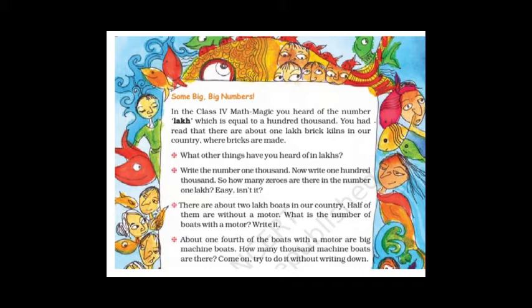You heard of the number lakh, which is equal to 100,000. You had read that there are about one lakh brick kilns in our country where bricks are made. In your fourth standard Math Magic textbook this is given — lakh is equal to 100,000. You heard of lakh and 100,000 on the Indian and international place value charts.